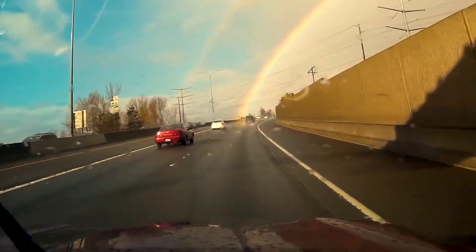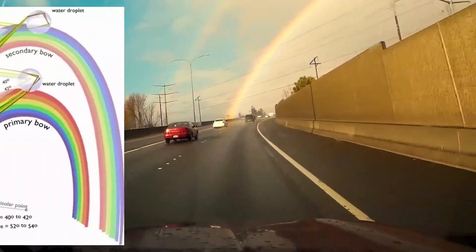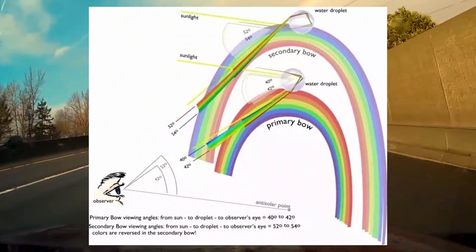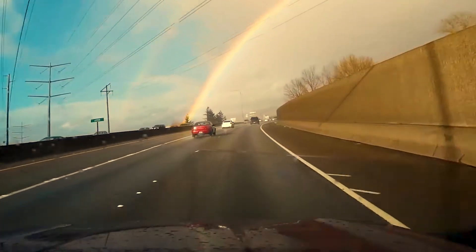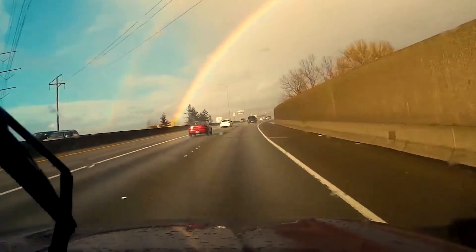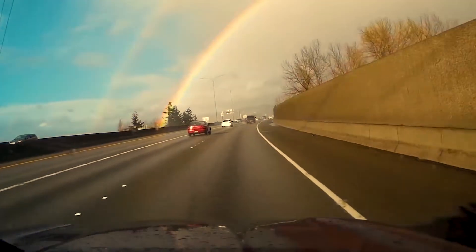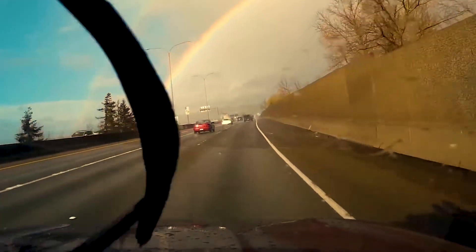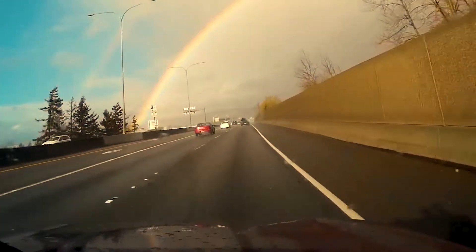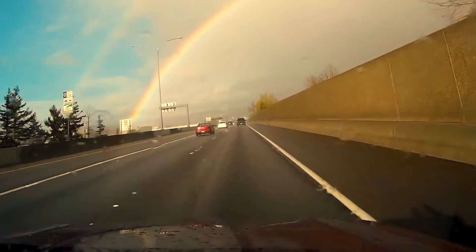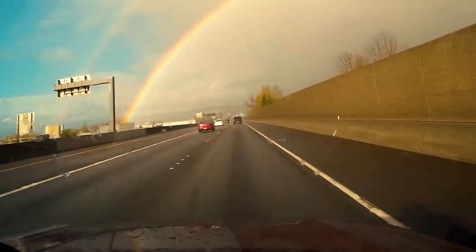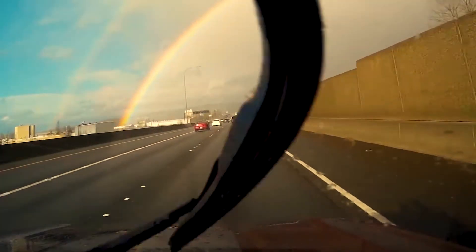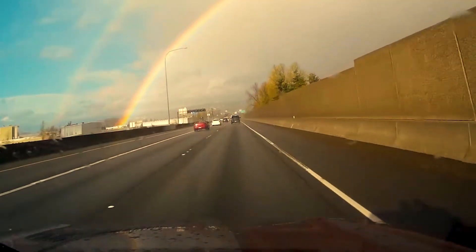Secondary rainbows are caused by a double reflection of sunlight inside the water droplets. The secondary rainbow is fainter than the primary because more light escapes from two reflections compared to one, and because the rainbow itself is spread over a greater area of the sky.